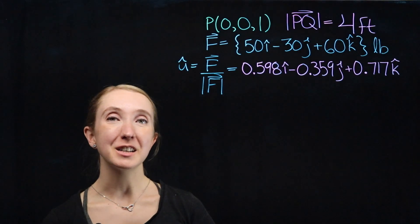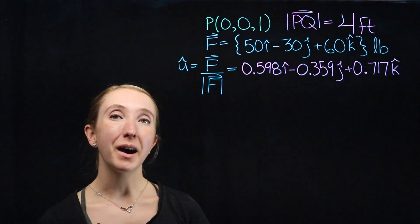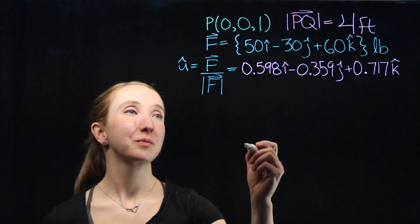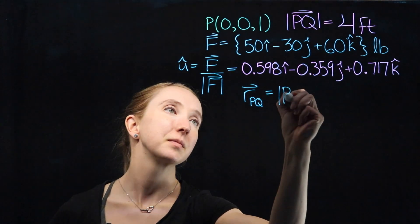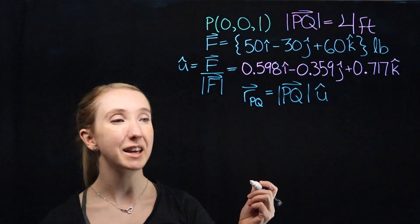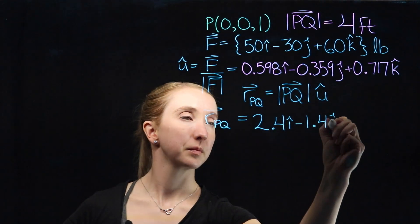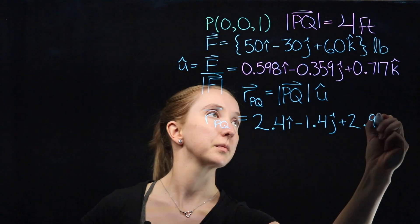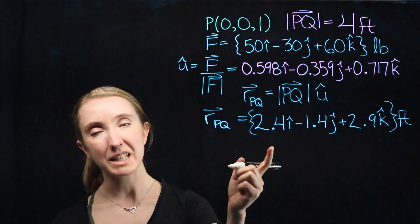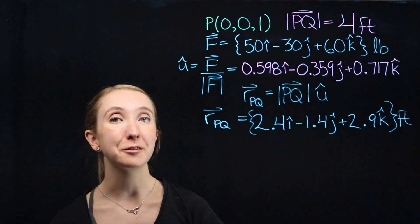Since our unit vector is going in the same direction as our rope from point P to Q, we can combine it with our rope length to give us our position vector. So multiplying each term by four feet, we get... I used one decimal place because I'm lazy, but you should use however many sig figs your prof asks for.